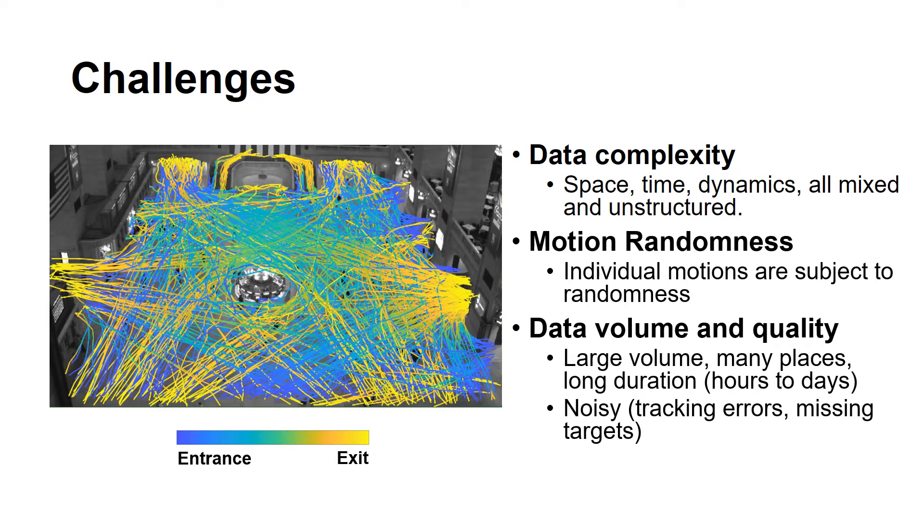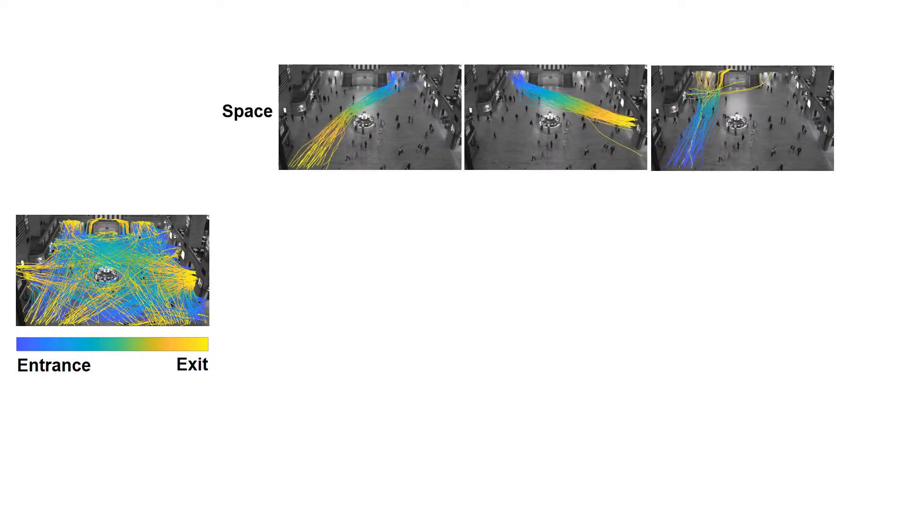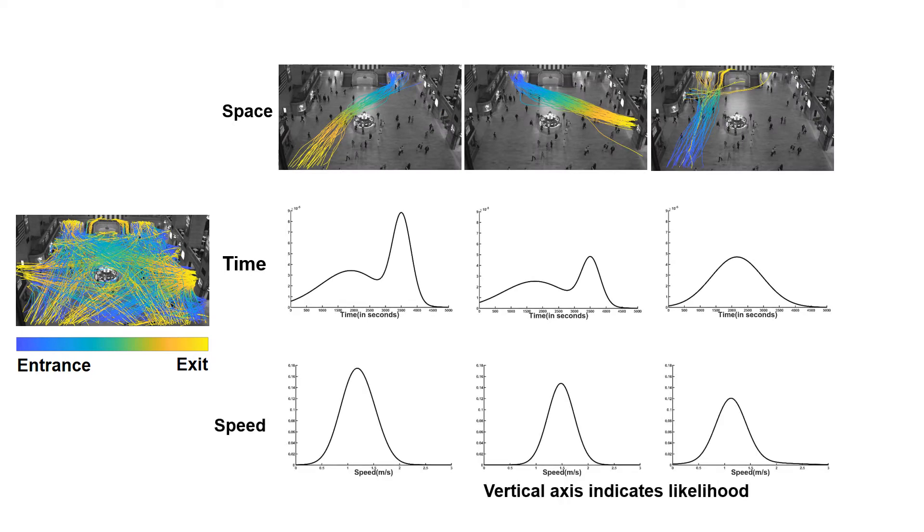To address the challenges, an ideal solution is an effective and efficient method which automatically takes highly unstructured and noisy data as input, structures it in separate modes in different dimensions, such as the space flows, their time profiles and speed profiles. By achieving so, a space, time, speed mode combined can describe a unique activity in the scene.